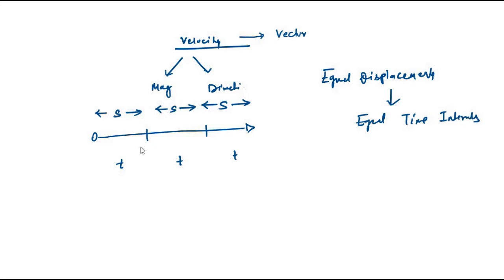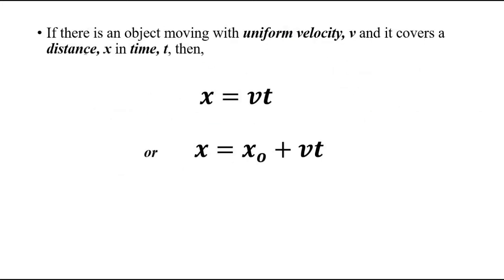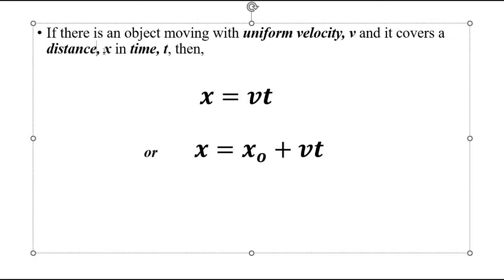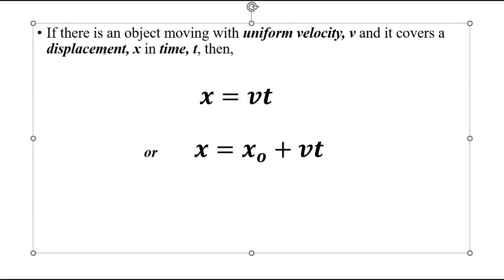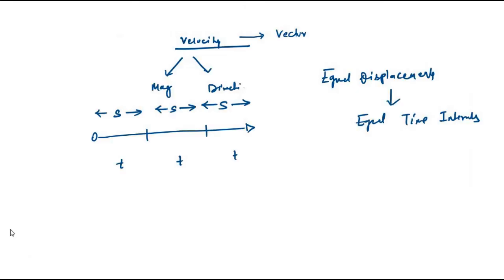We can express displacement, time, and velocity for uniform motion as follows. If an object moves with uniform velocity v and covers a displacement — when we say distance in a straight line it means displacement, because in a straight line the distance covered equals the displacement. To avoid confusion, I will write displacement.